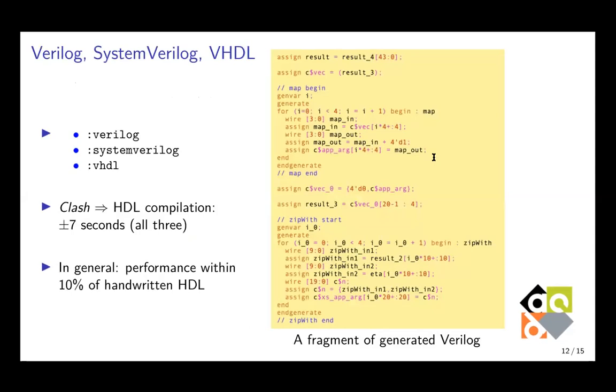And now we can translate our code into Verilog, SystemVerilog or VHDL by one of the appropriate commands. The compilation for any of these three languages took around seven seconds. And on the right hand side, you see an example of a fragment of generated Verilog. In general, the performance of your results is within 10% of handwritten VHDL in general.